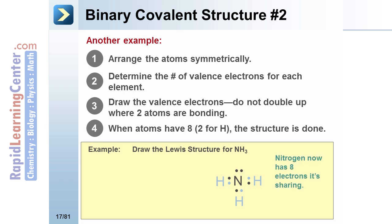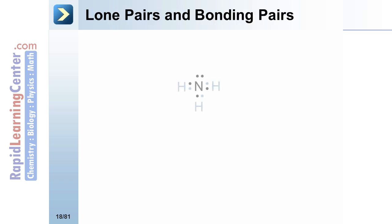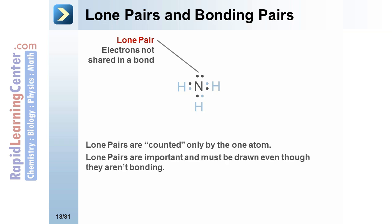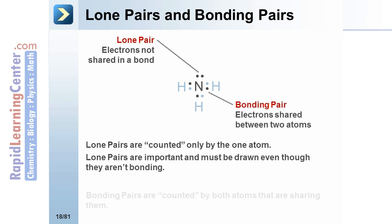Check the structure to see if the atoms have full valences: eight for the nitrogen, and two for each of the hydrogen atoms. The structure is now complete. A pair of electrons not being shared is a lone pair — these are important and they must be shown. A pair of electrons being shared is a bonding pair, and both atoms can count the electrons in the bonding pair.